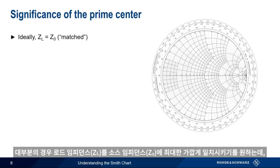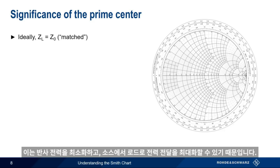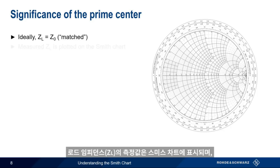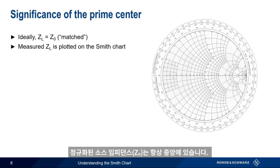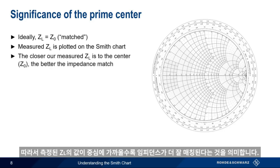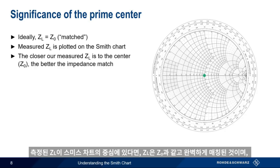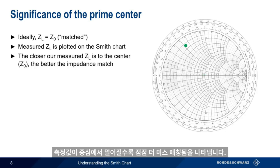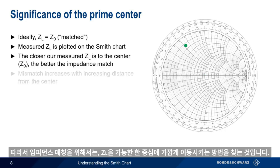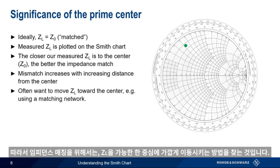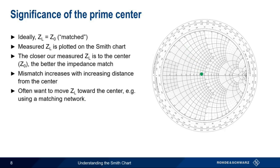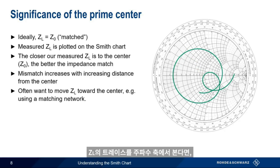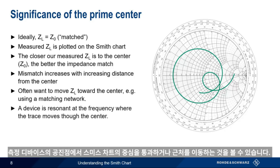Remember that in most cases, we want the load impedance, Z sub L, to be matched as closely as possible to the source impedance, Z sub 0, since this minimizes the level of reflected power and maximizes power transfer from source to load. Measured values of Z sub L are plotted on the Smith Chart, where our normalized source impedance, Z sub 0, is always in the center. So the closer our measured and plotted Z sub L values are to the center, the better our impedance match. If our measured load impedance falls on the center of the Smith Chart, Z sub L equals Z sub 0, and we have a perfect match. The farther away our measured value is from the center, the higher the degree of mismatch. A common goal of impedance matching, therefore, is to find a way of moving Z sub L as close to the center as possible. If we look at a trace of Z sub L as a function of frequency, then the load is resonant at the frequency where the trace moves through, or near, the center of the Smith Chart.